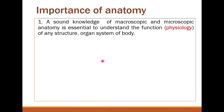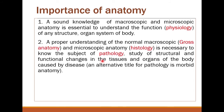From cells, tissues are formed; from tissues, organs are formed; from organs, systems are formed; and from systems, human beings are formed. There are a total of 12 systems in the body. Therefore, understanding the structure and function of these systems is very important. If you do not study anatomy, you will not understand physiology.